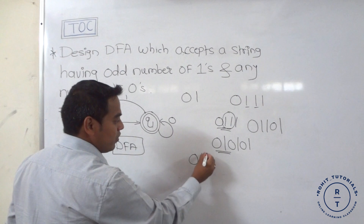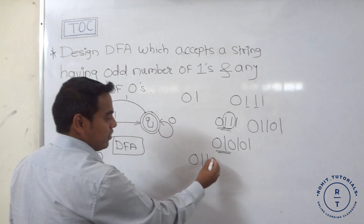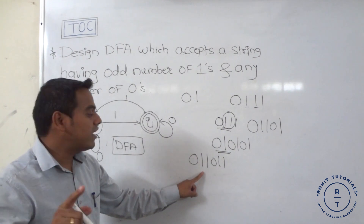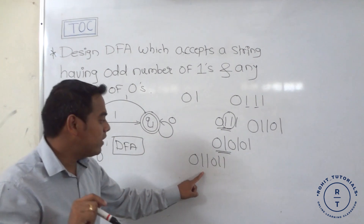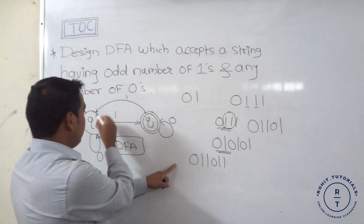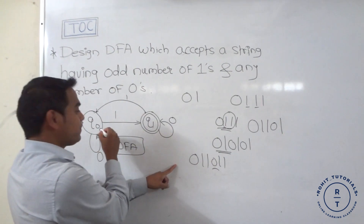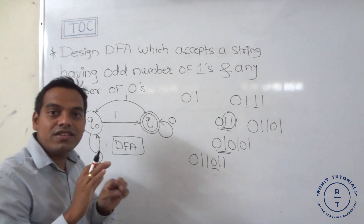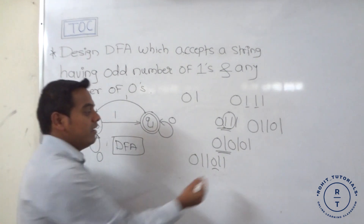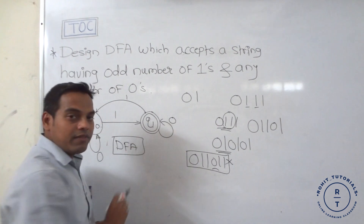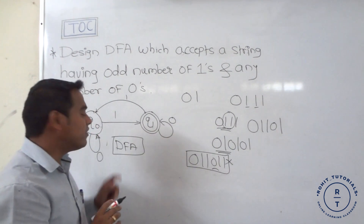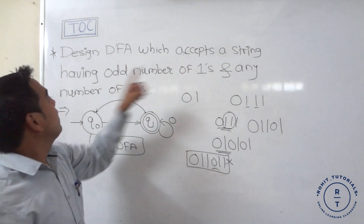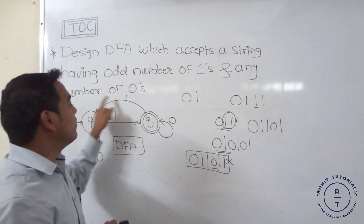Let's verify with the string '011011' — this does not consist of an odd number of ones (it has four ones), so it should not be accepted. Tracing: '0' stays at q0, '1' goes to q1, '1' goes back to q0, '0' stays at q0, '1' goes to q1, '1' goes back to q0. It ends at q0, which is not a final state, so the string is correctly rejected.